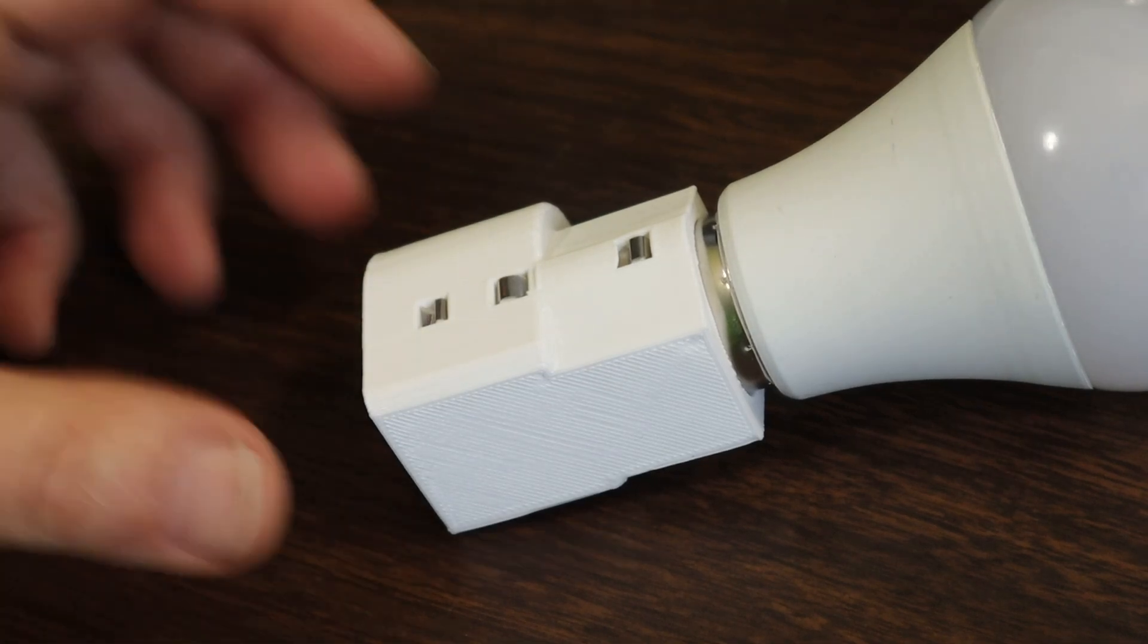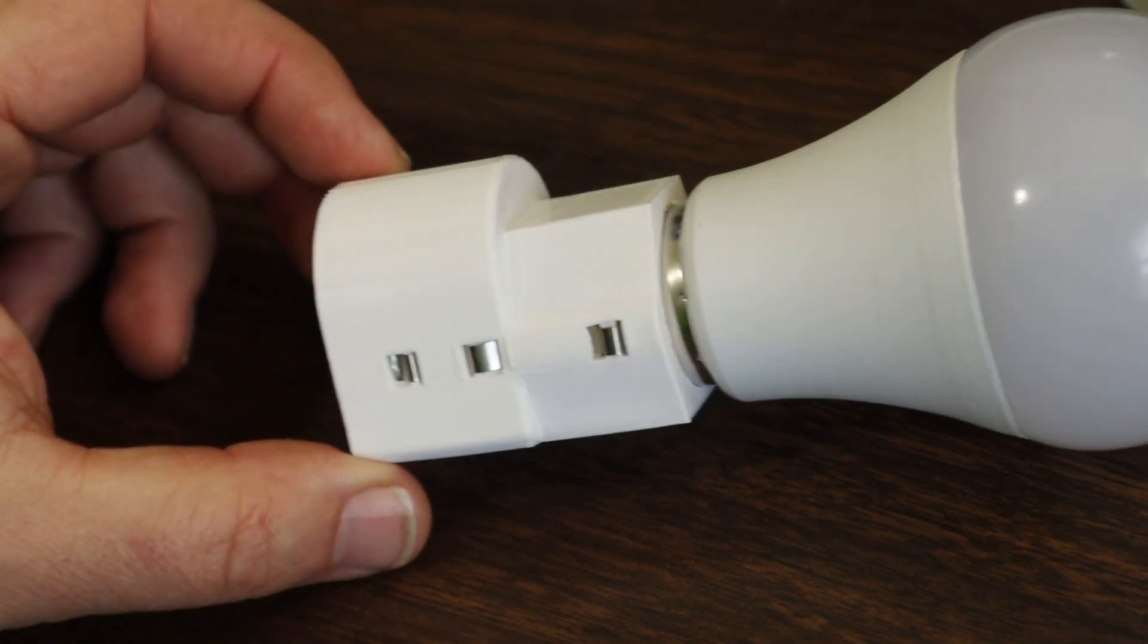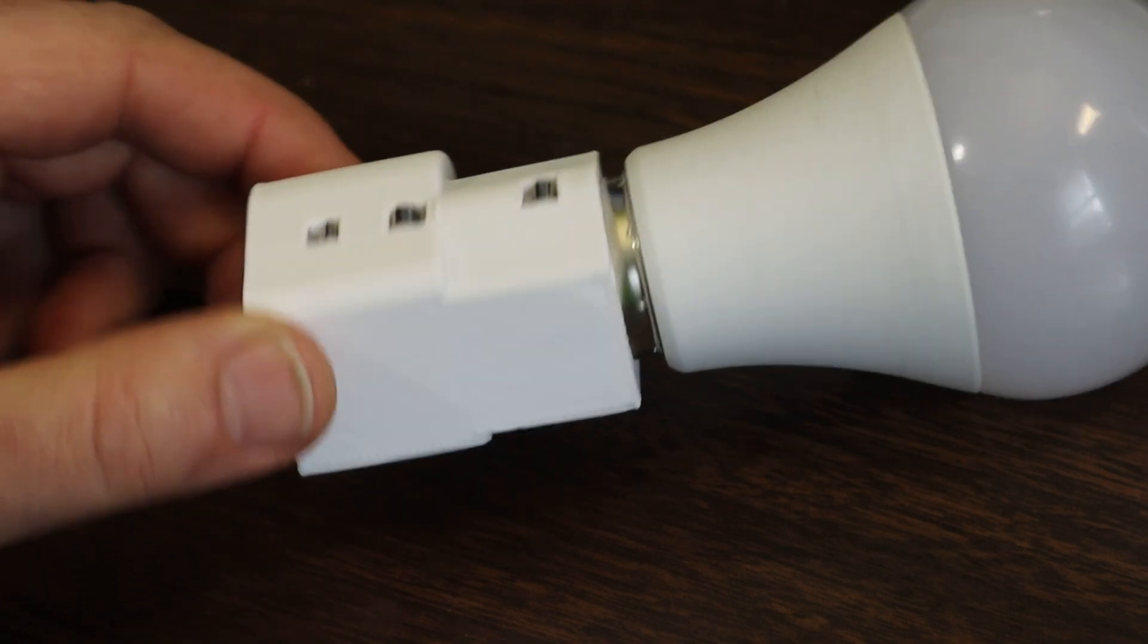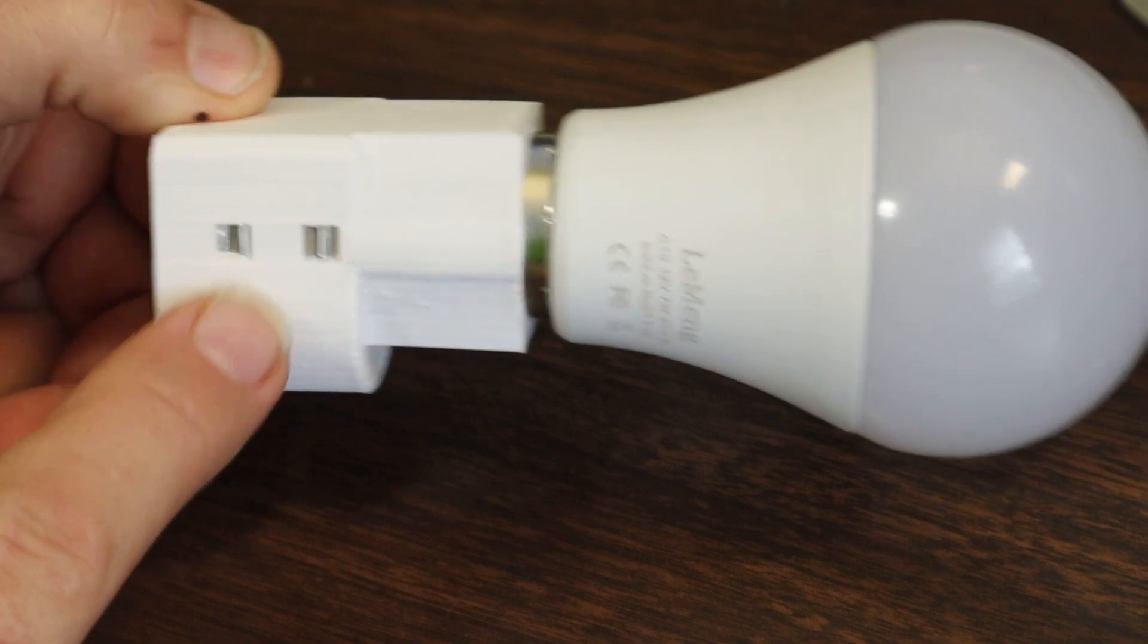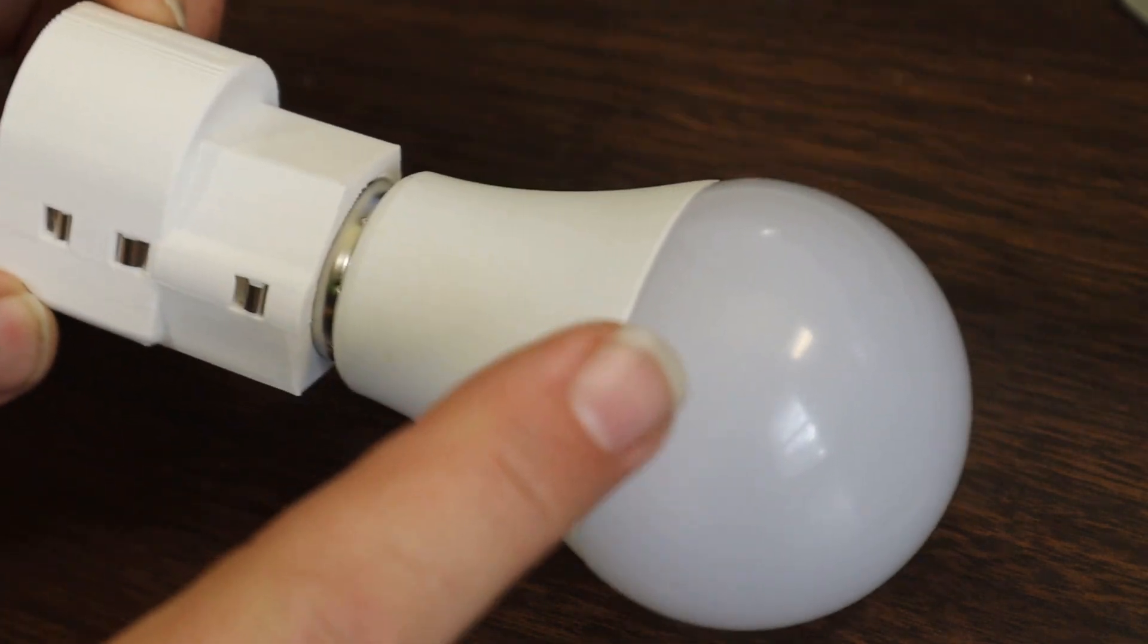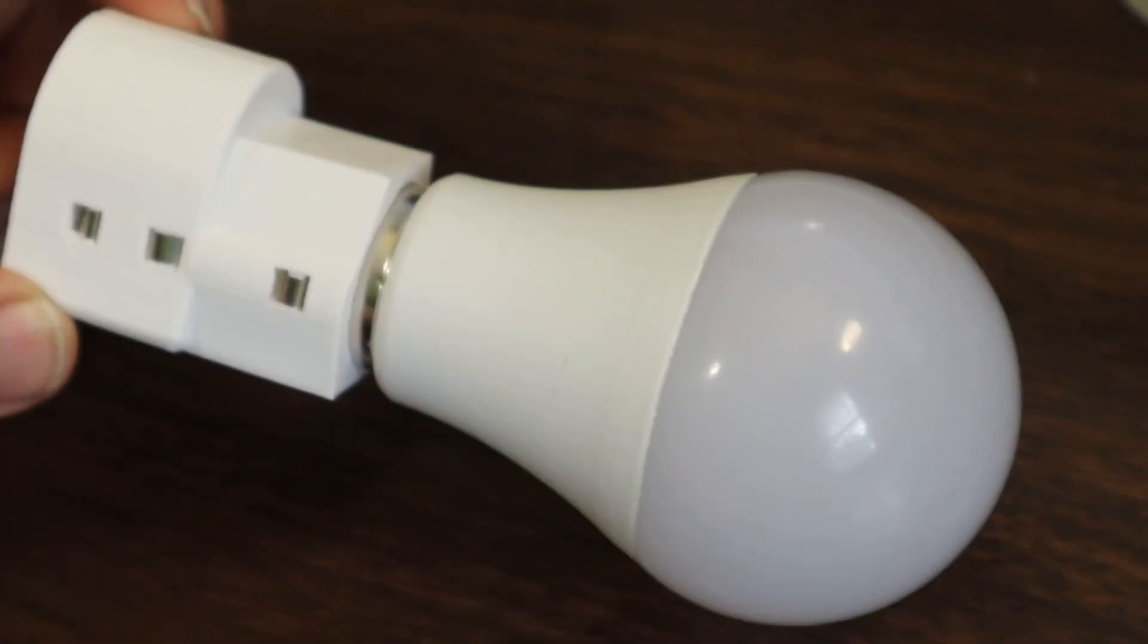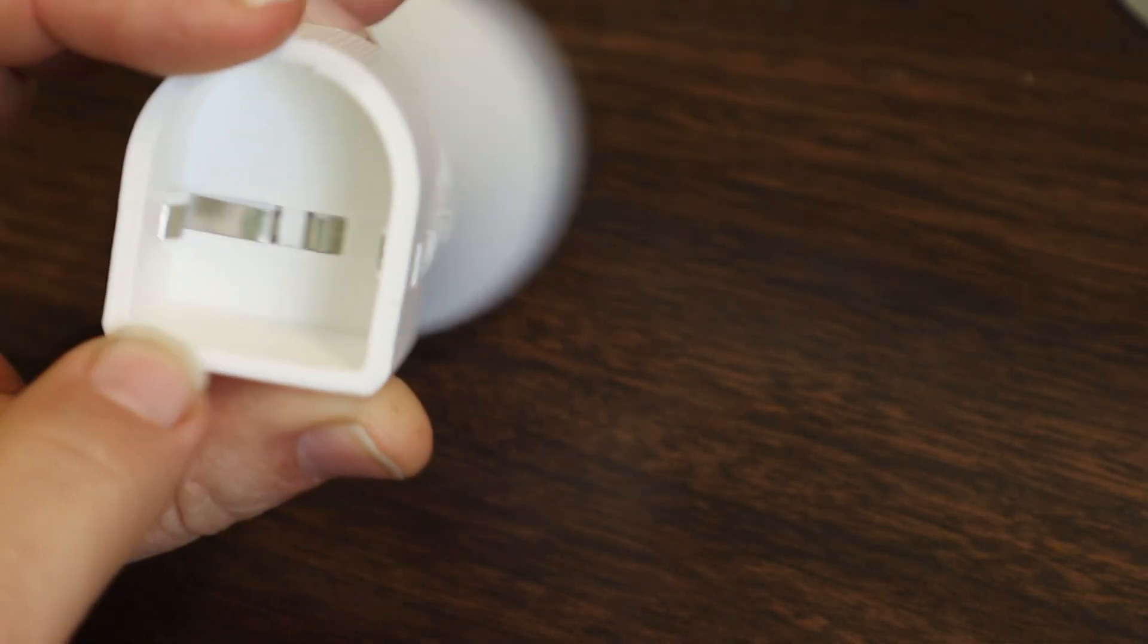Okay guys, this is a quick and dirty video. Right here is my Ryobi light bulb adapter. This is a 3D printed part that allows you to connect an 18 volt light bulb directly to a Ryobi battery.